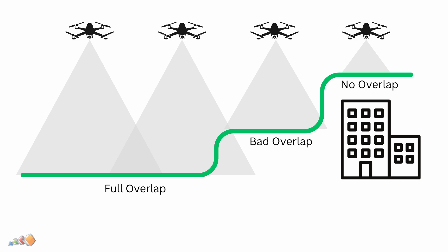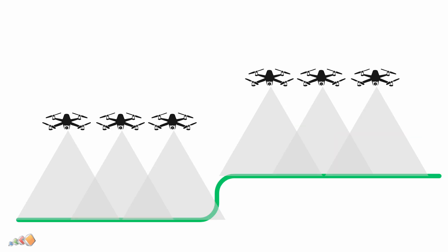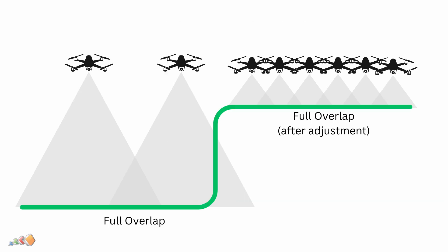So what can you do about that? To adjust for this you have two options. The first option is to fly at a consistent relative altitude. If the ground is just uneven then using terrain follow can keep your drone at a constant height above ground level, maintaining consistent overlaps. The second option is to increase your overlaps. The best way to do that is to tell your software how far away the target is, and most good mapping software has the ability to do this.